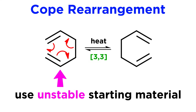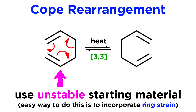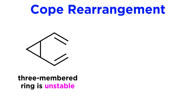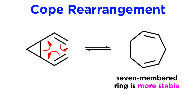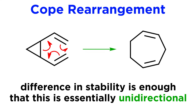But organic chemists have come up with clever tricks to enhance the utility of the technique. One approach is to generate some starting material that is dramatically more unstable than the product of the sigmatropic shift, and one way to do this is to incorporate ring strain. For example, consider this structure with a cyclopropane ring. In carrying out the reaction, the three-membered ring is cleaved and a seven-membered ring is formed. The difference in stability is so extreme that we can consider this to be essentially unidirectional.